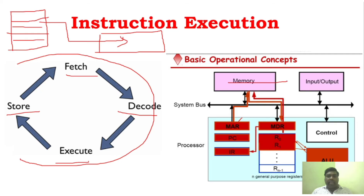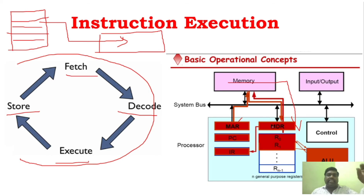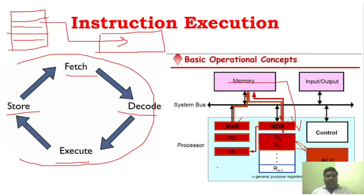Whatever instruction is in the PC, it will be fetched through MAR and then through MDR. Once the instruction reaches MDR, it will be sent to the IR — the instruction register — which performs the current execution of the instruction. The instruction is held in IR and that is where it will be executed.